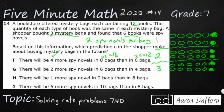Answer choice G says there will be two more spy novels in six bags than in four bags. Six bags is going to be 12, and four bags is going to be 8. That's a difference of four, not a difference of two. So G is incorrect.